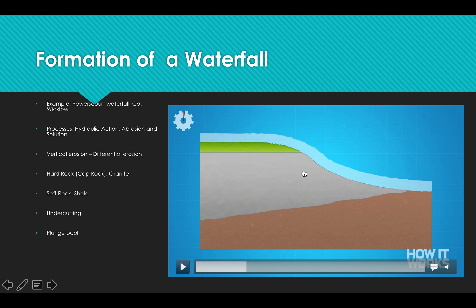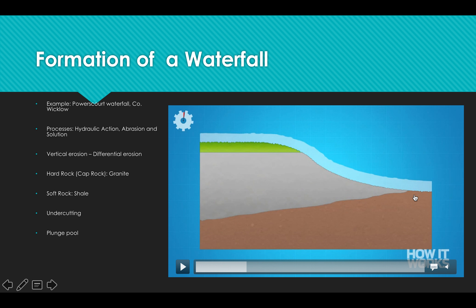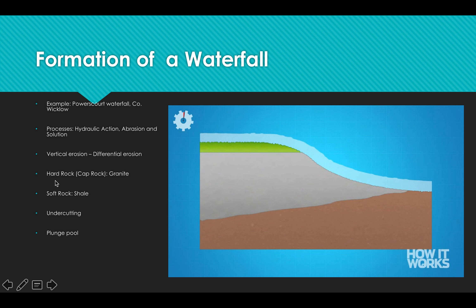Differential erosion is when you have a hard rock — in this example it's granite — and a soft rock after it, which is shale; those are the two rocks found at Powerscourt. Differential erosion is where the soft rock is eroded more quickly through vertical erosion, so the soft rock is eaten away and it undercuts the hard rock. A plunge pool then forms at the bottom of the waterfall. These are the key terms you need to include and be able to define.